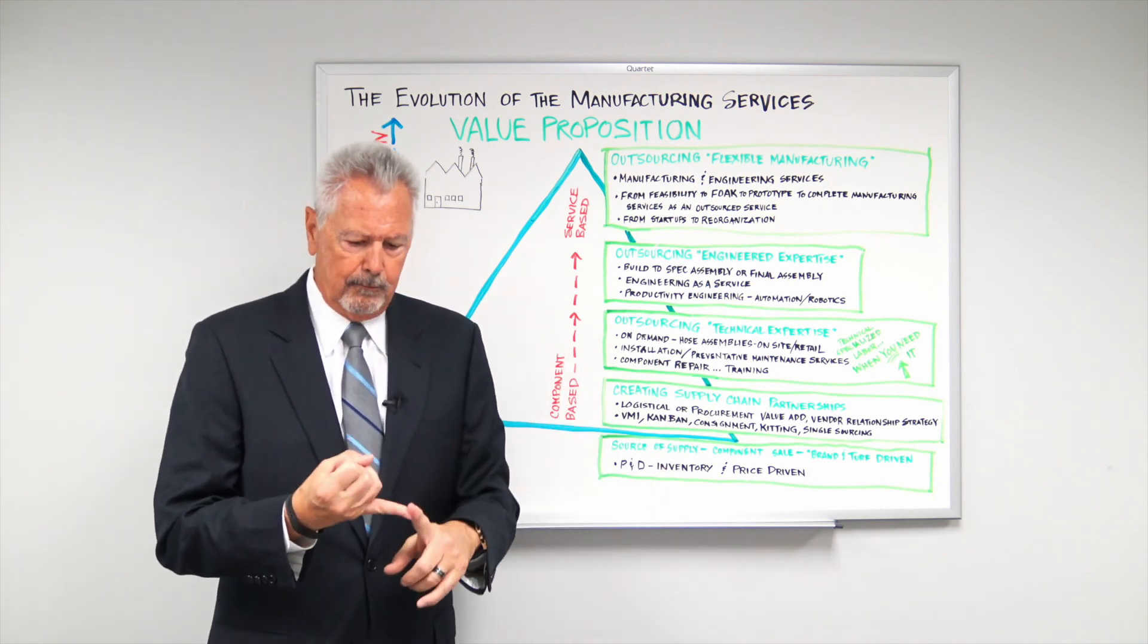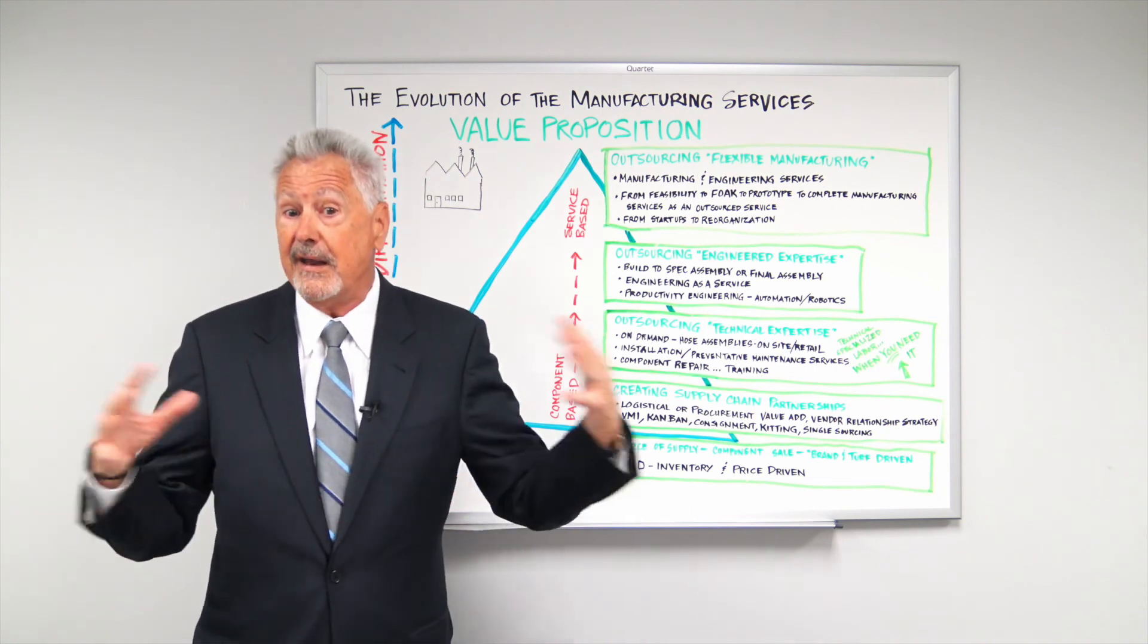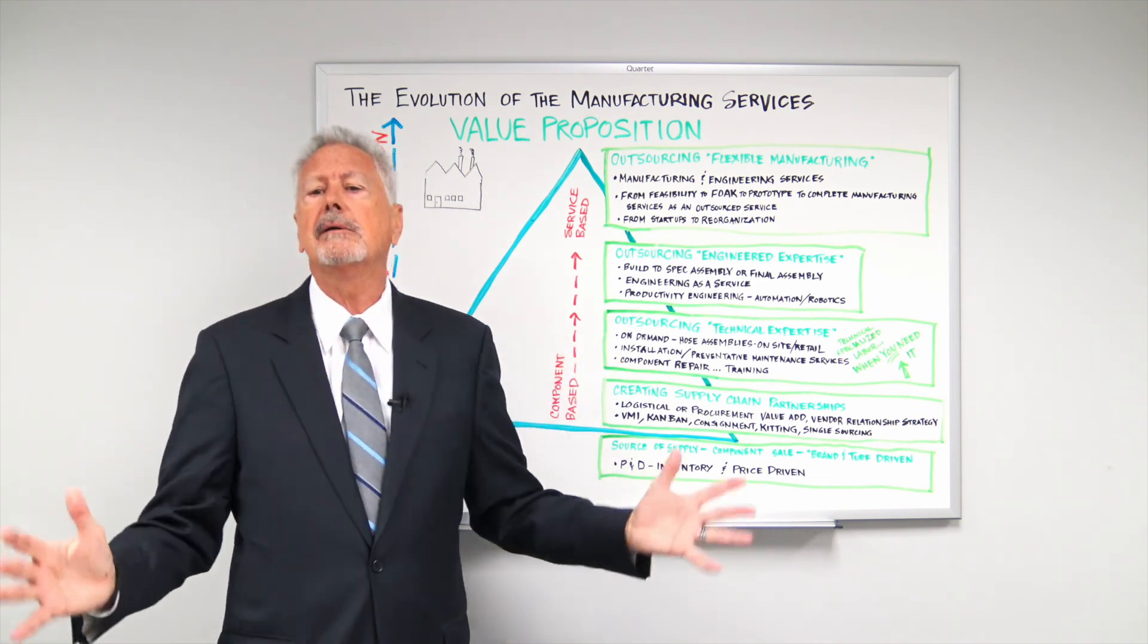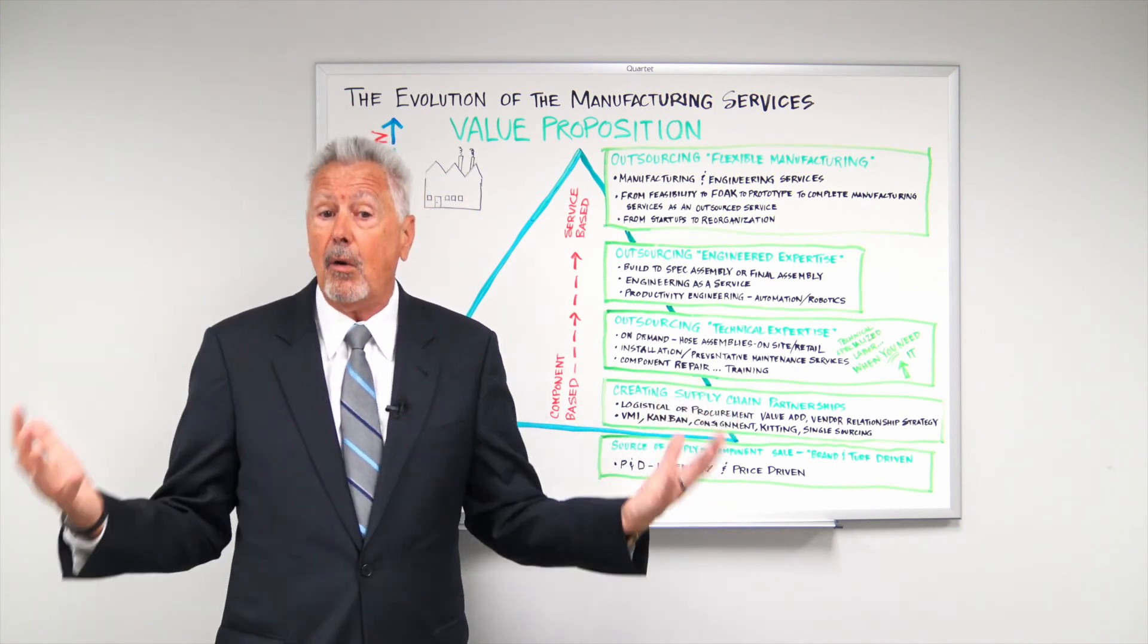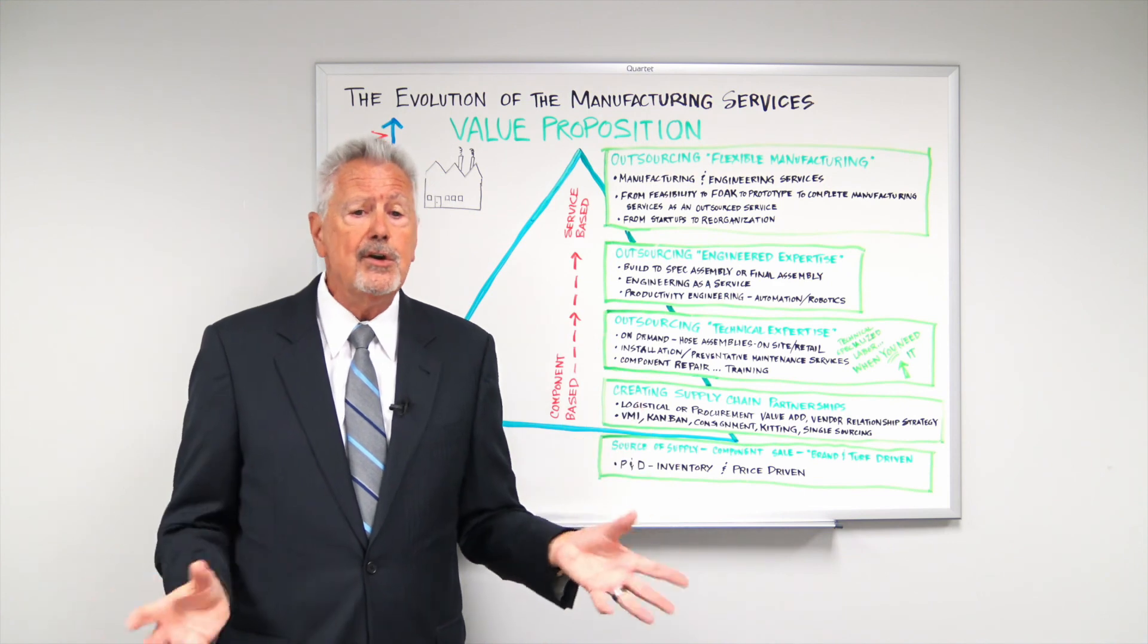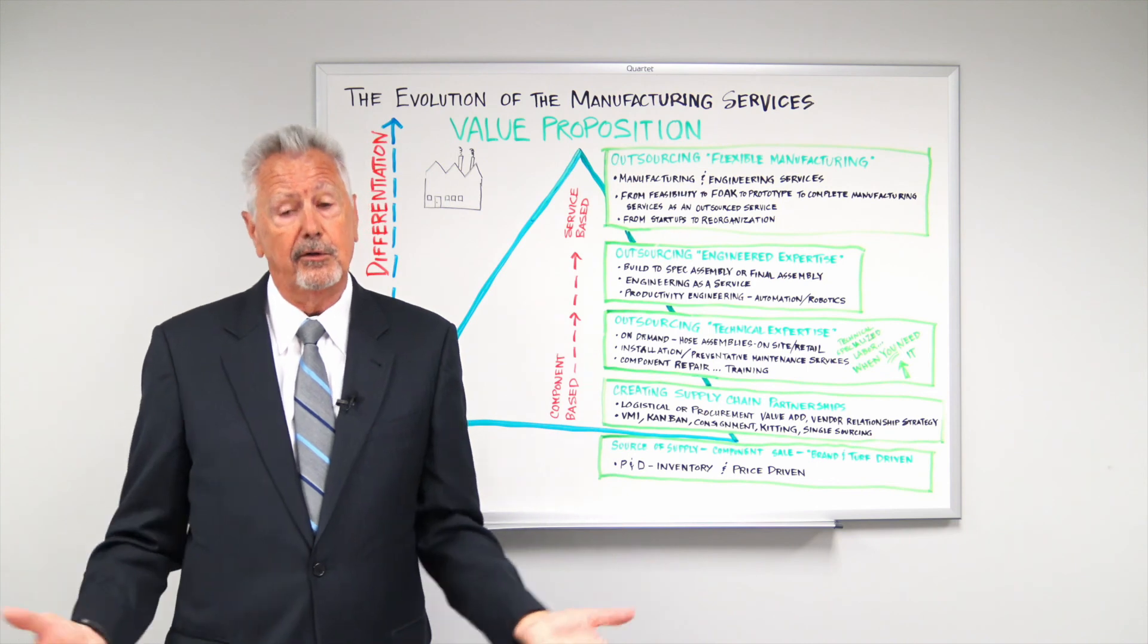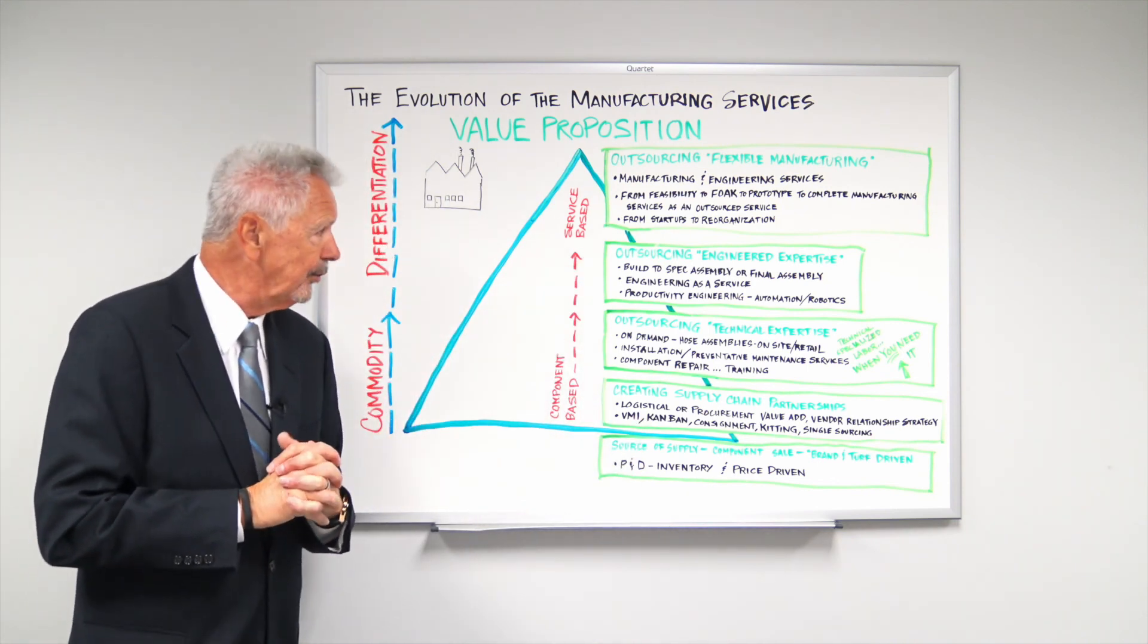But it gives that customer or that manufacturer the ability to outsource everything. It can be from the feasibility study to the first of a kind to a number of prototypes to final assembly and engineering and warranty turnkey. It basically relieves them of all of the manufacturing costs that they have. And all they have to do is market and somebody else takes care of making it for them in the U.S. So it's insourcing versus outsourcing even though we're kind of calling it outsourcing.